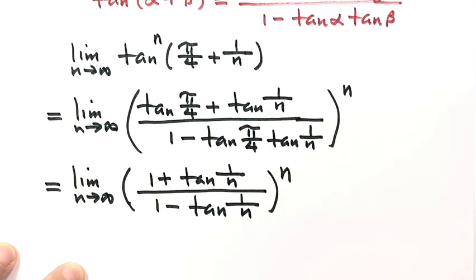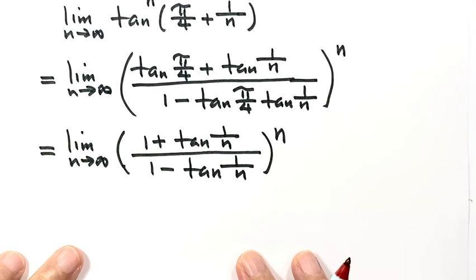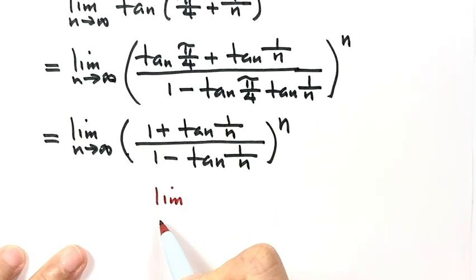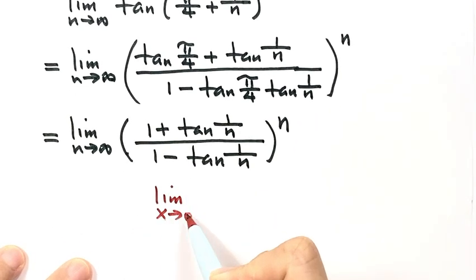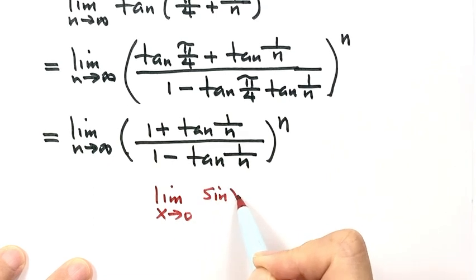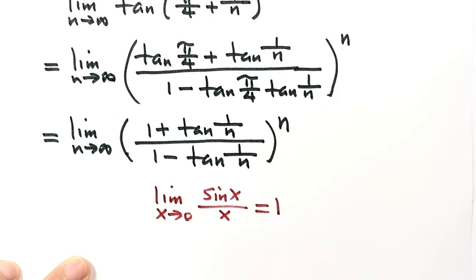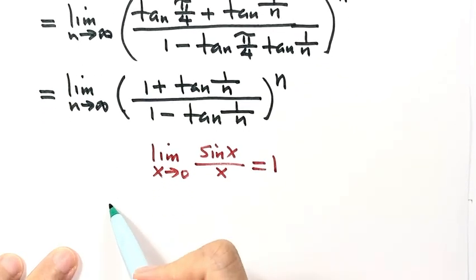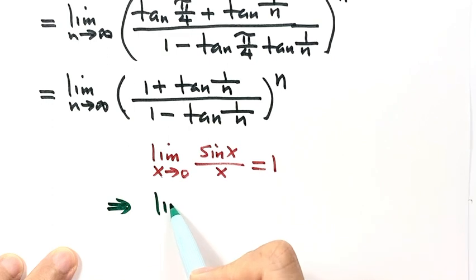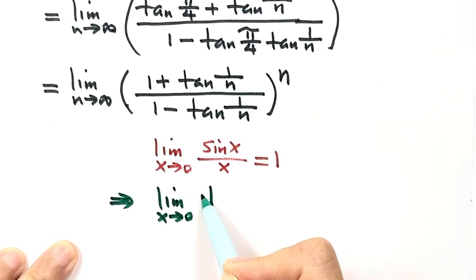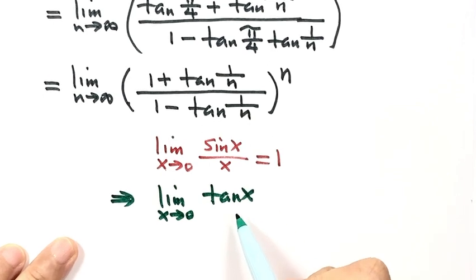Before we continue, let's recall a result: the limit as x goes to 0 of sin(x) over x equals 1. Now let's see what is the limit as x goes to 0 of tangent(x) over x.